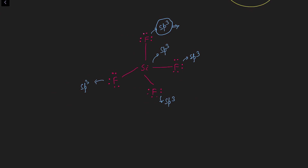The lone pair of fluorine is in an sp3 hybrid orbital. For fluorine to donate this electron and form a pi bond through back bonding, the lone pair must be in a pure p orbital. So fluorine changes its hybridization from sp3 to sp2, because SiF₄ gains maximum stability when one back bond forms between silicon and fluorine.